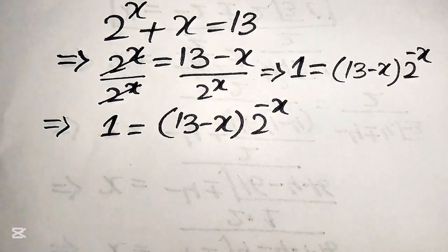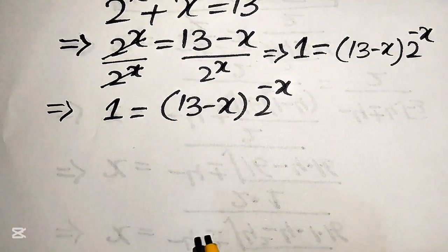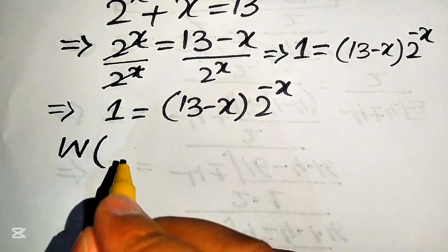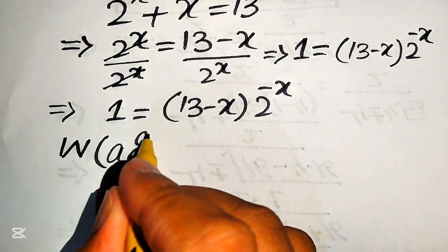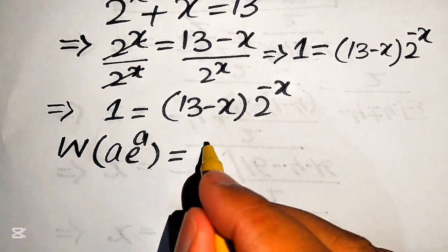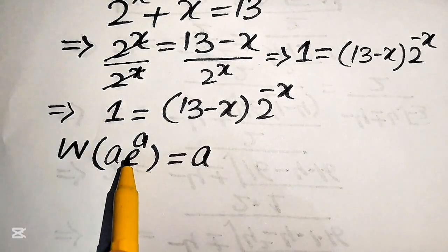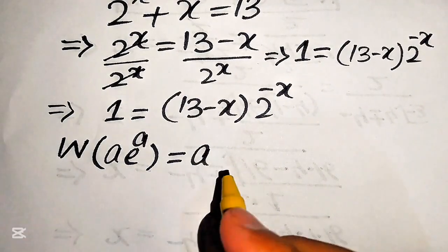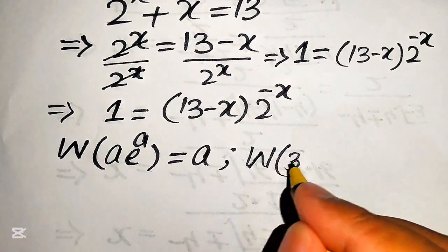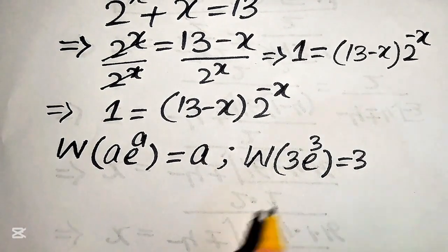We can solve this problem with the help of the Lambert W function. The Lambert W function is defined such that if we have W of a times e to the power of a, the output equals a. For example, W of 3 times e to the power of 3 equals 3.